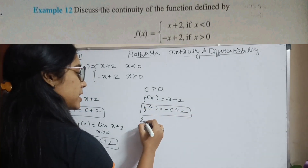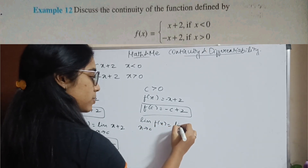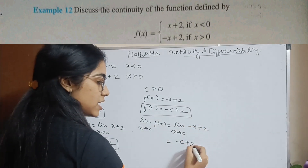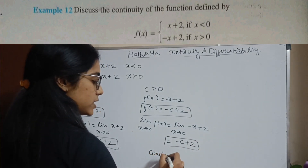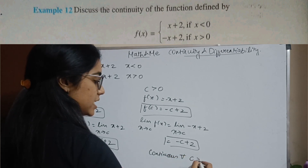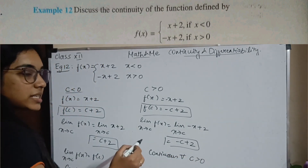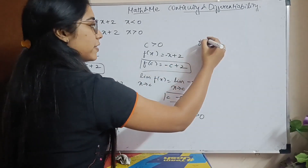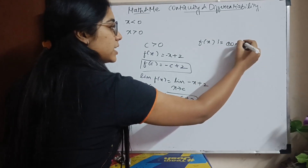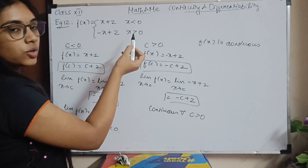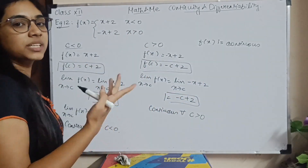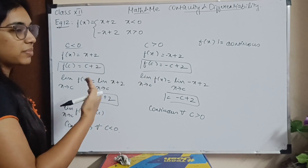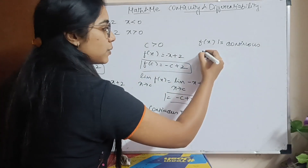If c is greater than 0, the one and only condition for f of x is minus x plus 2. So f of c is minus c plus 2. The limit x tends to c of f of x is limit x tends to c of minus x plus 2. Substituting c I will have minus c plus 2. They are equal, so this is continuous for all values where c is greater than 0. For c less than 0 it is continuous; c greater than 0 it is continuous. At 0 they have not given any condition in the question, so f of x is continuous in the given domain.